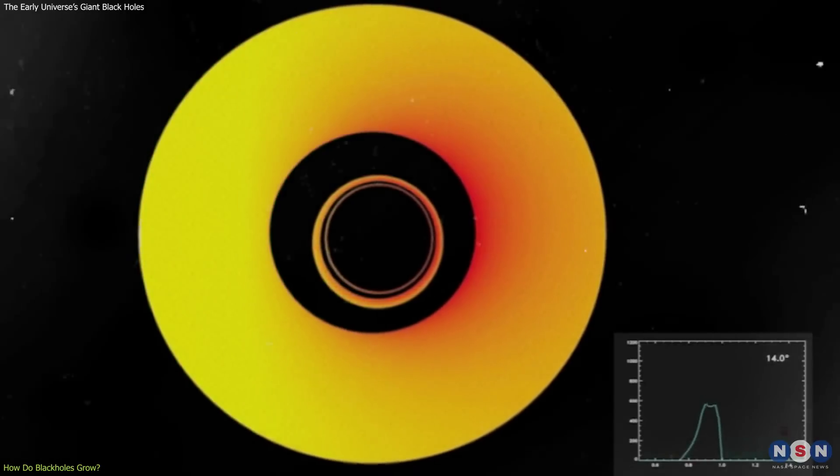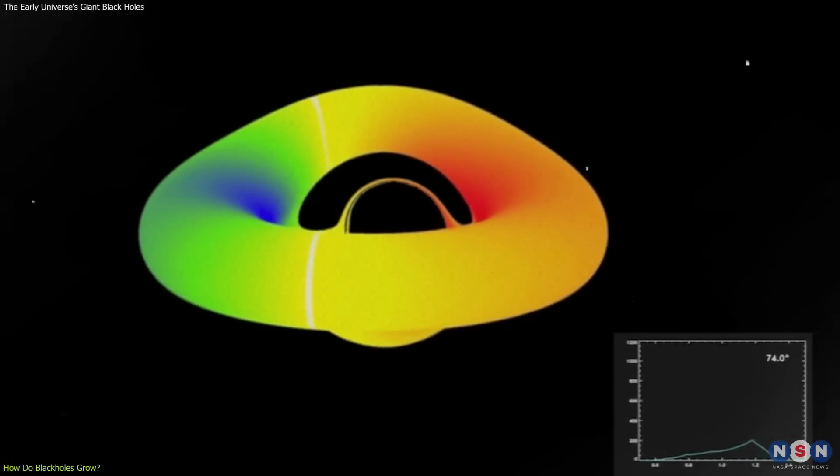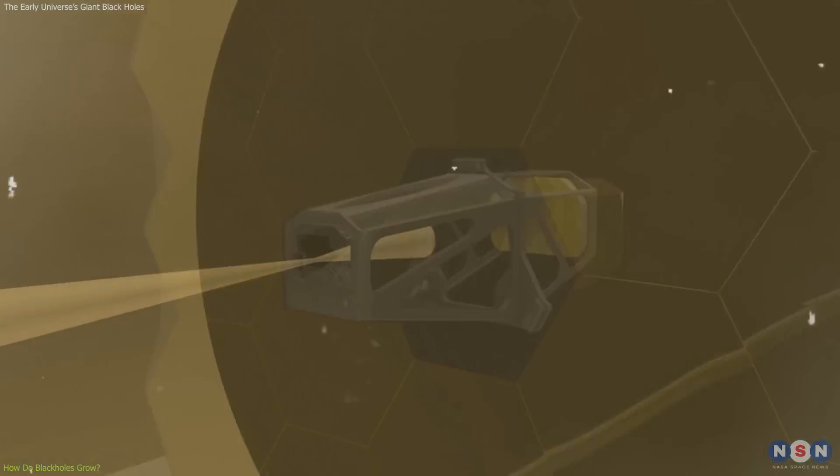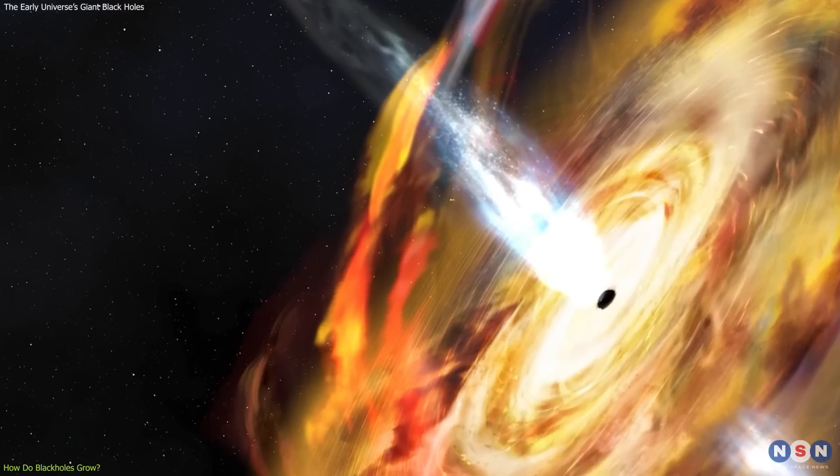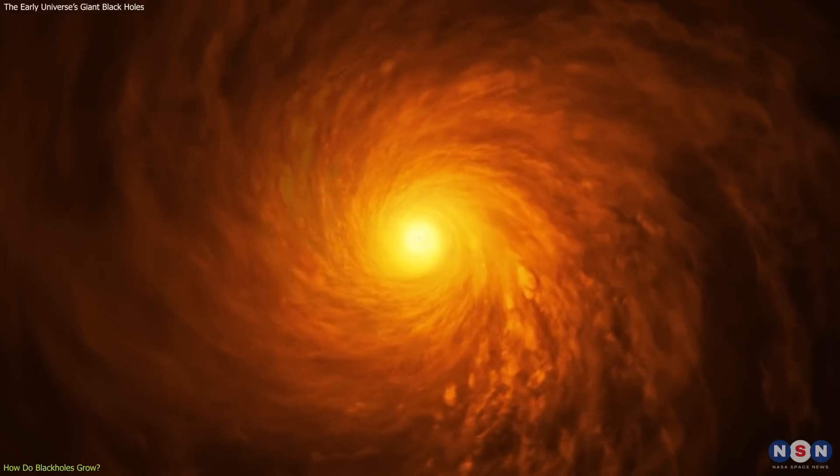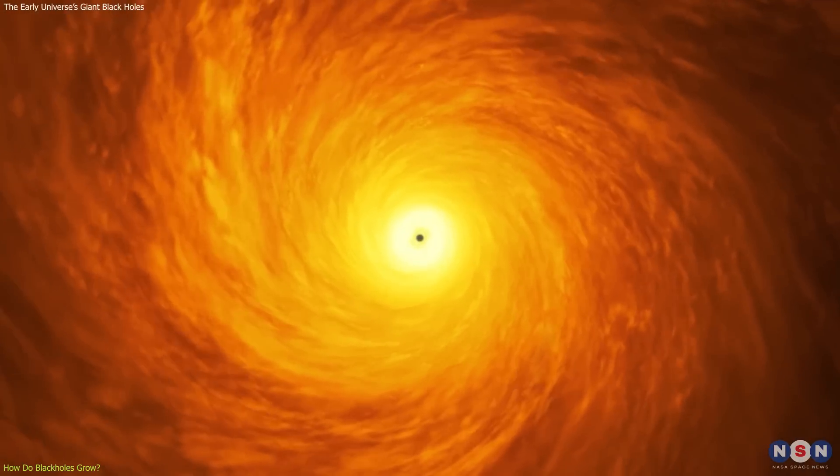The disk heats up due to friction and emits radiation across the electromagnetic spectrum, from radio waves to X-rays. This radiation can be detected by telescopes like JWST, which can measure the brightness, color, and shape of the disk. By studying these properties, astronomers can estimate the mass, spin, and temperature of the black hole.